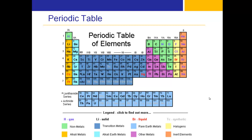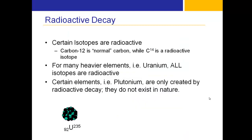All of the grayed-out elements after uranium are man-made, synthesized by radioactive decay in a laboratory — we'll get into that in more detail later. In radioactive decay, certain isotopes are radioactive. Carbon-12 is normal carbon, while carbon-14 is a radioactive isotope.